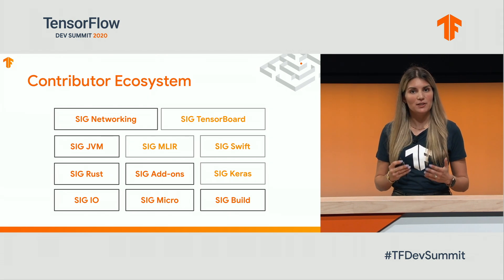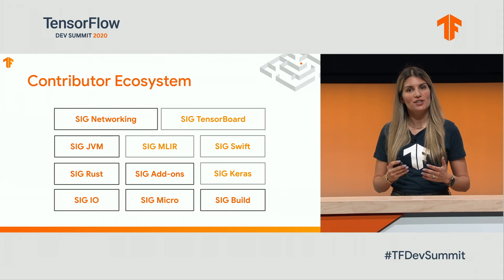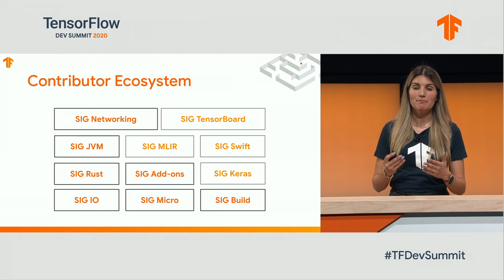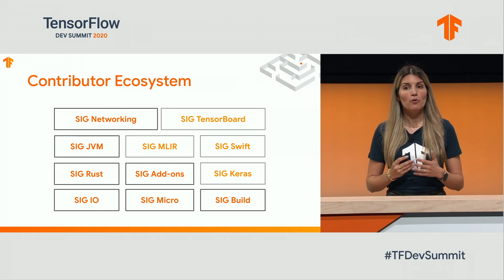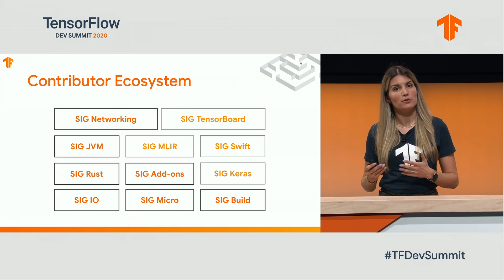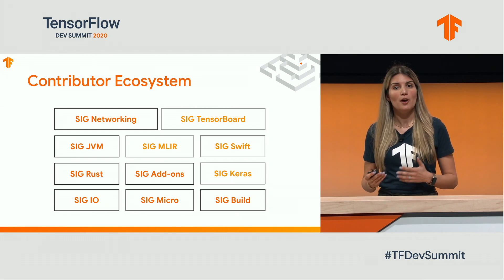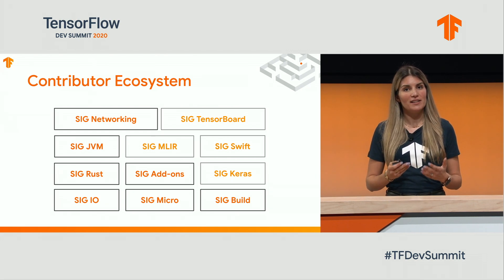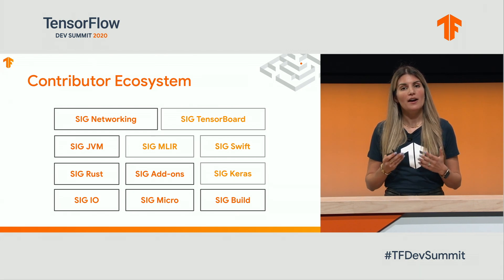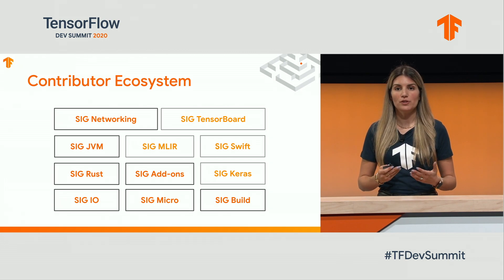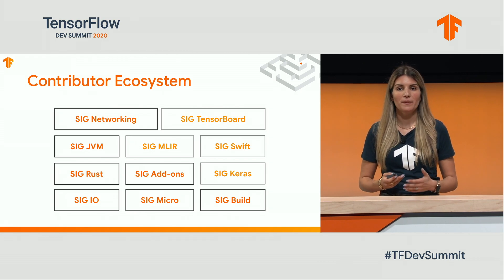Build, IO, Networking, JVM, and Rust, and Micro, who are community-led open source projects, whereas Keras, MLIR, Swift, and TensorBoard are Google-led with an open source philosophy.